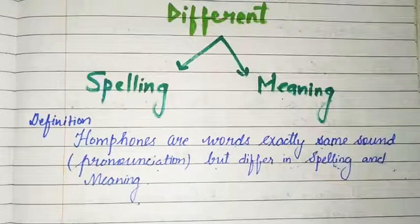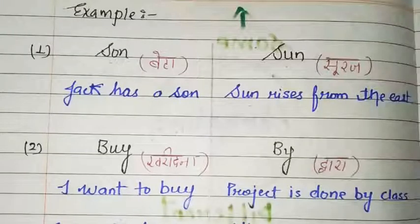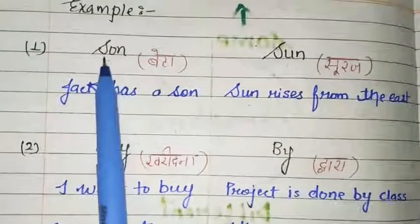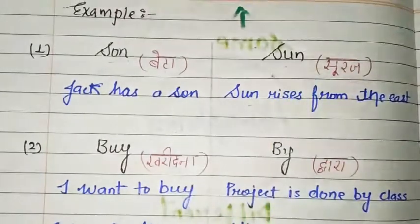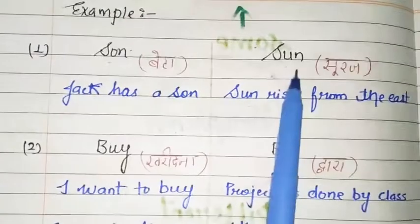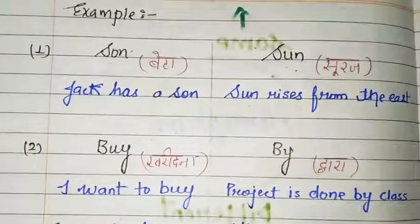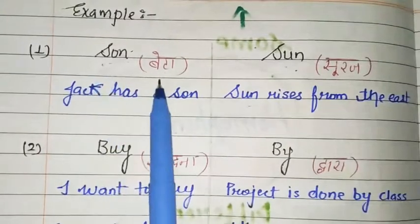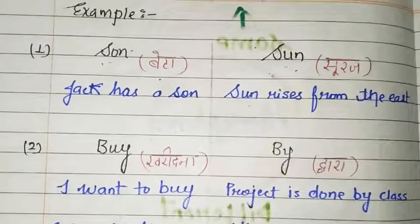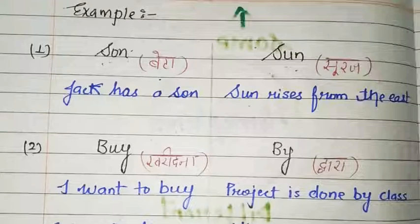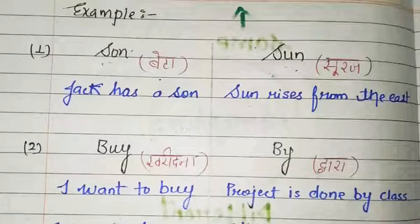Let's understand by example. Example number one: 'son' (S-O-N) and 'sun' (S-U-N). Dear students, aap ne dekha — 'son' aur 'sun' ka sound pronunciation same hai. But dono ke meaning and spelling different hai. S-O-N 'son' matlab beta, and S-U-N 'sun' matlab suraj. Aise words jinke sound pronunciation same hote hai, bolne sunne mein same lagte hai, but different meaning and spelling — aise words ko hum homophones kehte hai.